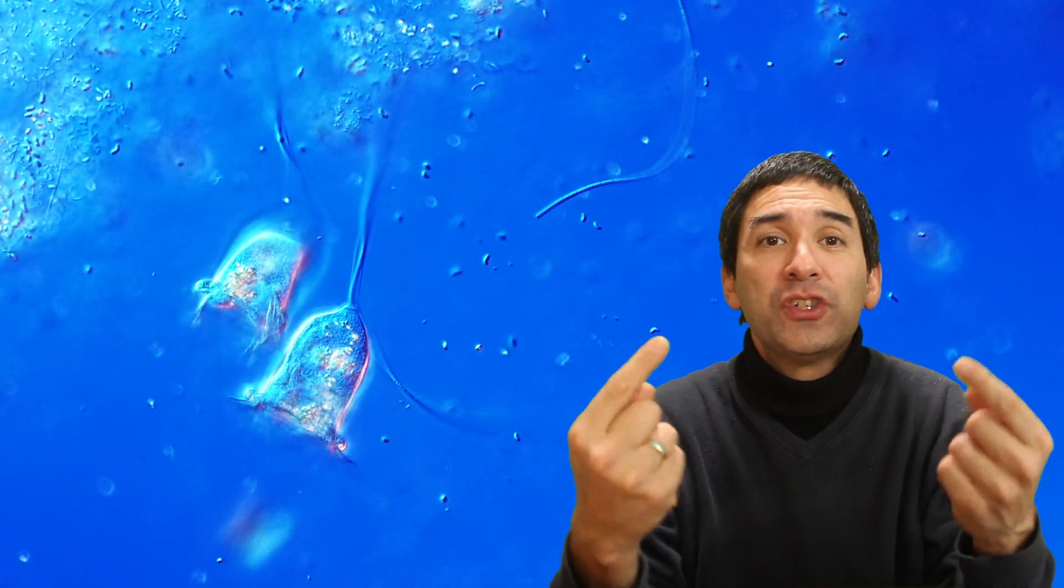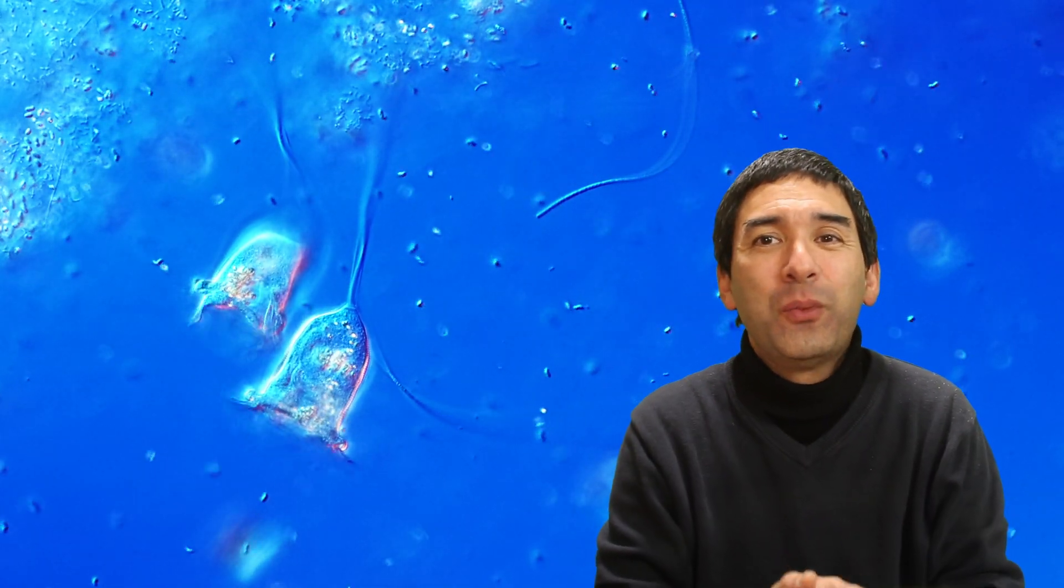And especially vorticella is able to create a visible vortex, which is a circular movement of water, and this is the reason why scientists gave vorticella the name that it has because of the water vortex that it is able to create.